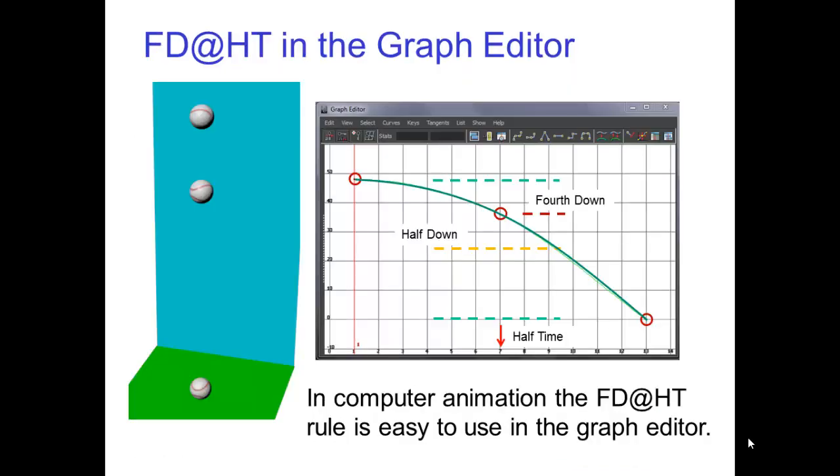In computer animation, the fourth down at half-time rule is easy to use in the graph editor. After selecting the top and bottom keys, just position the breakdown key as shown here. The computer will automatically calculate the position of the ball on all the other frames. By the way, this graph editor curve needs to be flat at the apex. Don't forget to check that.